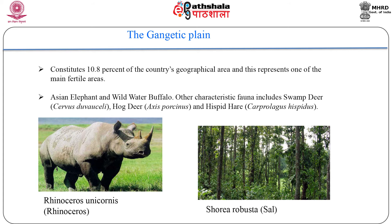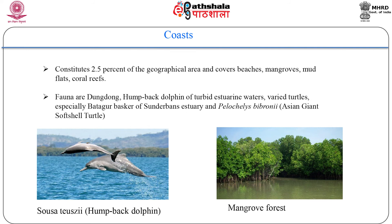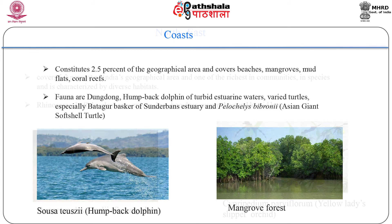The coastal zone constitutes 2.5 percent of the geographical area and covers beaches, mangroves, mud flats, coral reefs, and marine angiosperm pastures. The Sundarbans, shared with Bangladesh, is the largest contiguous mangrove area in the world. The Lakshadweep Islands, having a biodiversity-rich reef lagoon system, are also included in this zone. The fauna includes Irrawaddy and humpback dolphins, various turtles especially the batagur baska of the Sundarbans, and the ancient giant soft-shell turtle.